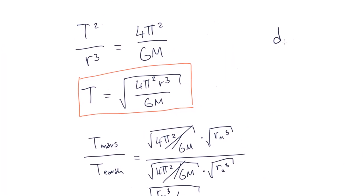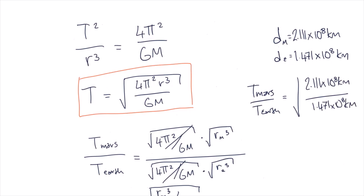We've already been given the radius of Mars's uniform circular motion, which is the distance from Mars to the Sun, which is equal to 2.111 times 10 to the 8 kilometers. If we plug in these values to compare the period of Mars to the period of Earth, we find that the answer is 1.72 to two decimal places.